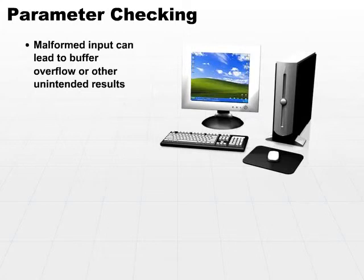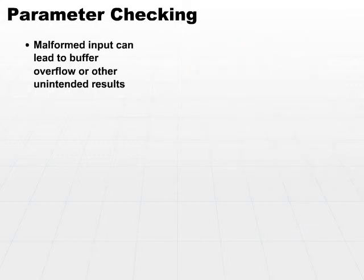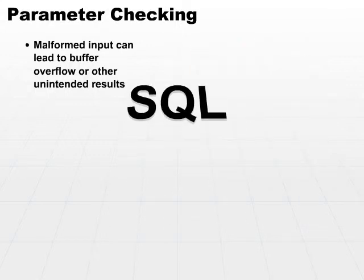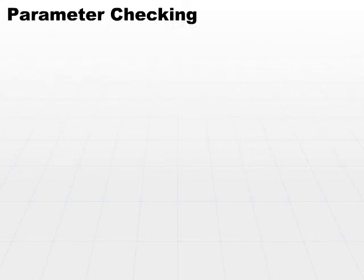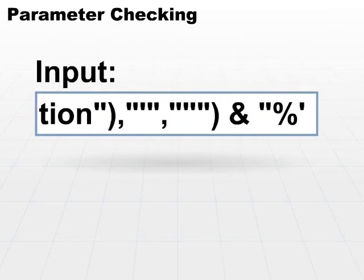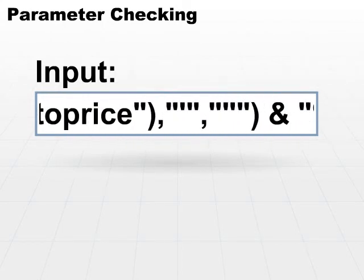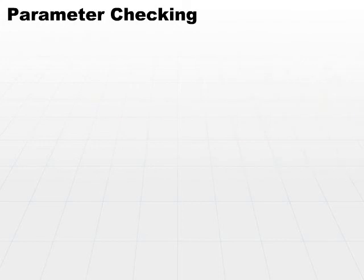Most commonly, an attacker wants to crash a program and then gain access in privileged mode — you want to make sure that never happens. Other unintended results include things such as SQL injection attacks. An attacker may very well be able to pass an actual SQL statement in through your web application if you don't check the input parameters. The input parameter may be passed directly into your database, allowing an attacker to extract tons of information they should never be able to see.